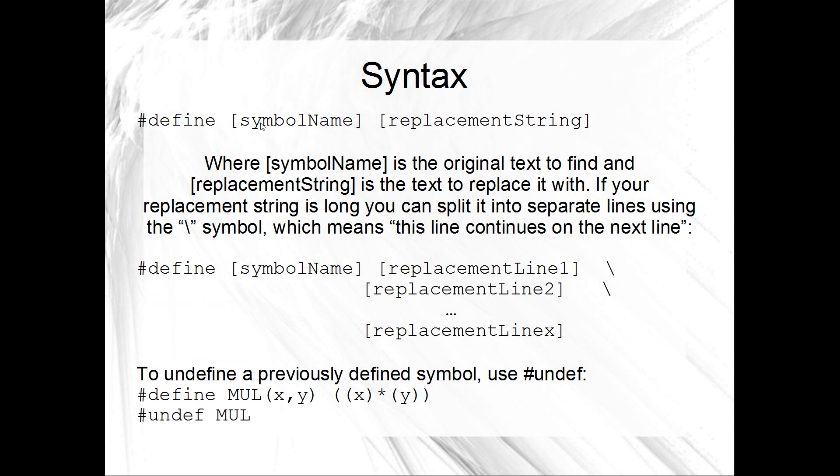Okay, so moving on to the basic syntax of define, it goes a bit like this. We've got pound define, and then we supply some symbol name, and then some replacement string. So the symbol name is often capital letters. You don't have to do capital letters, but it's often a capital letter. And it's what the preprocessor has to look for. And the replacement string is what you want the preprocessor to replace that symbol name with. So it's just going to play a bit of Where's Wally, and every time it finds Wally, it's going to replace it with your replacement string. Simple as that, really.